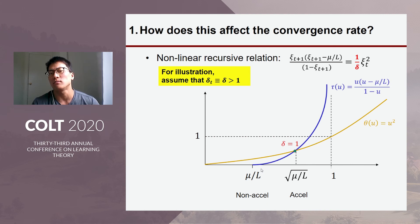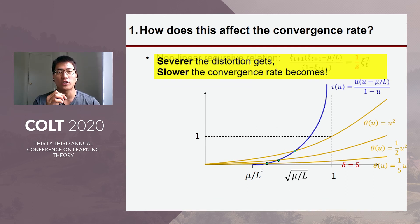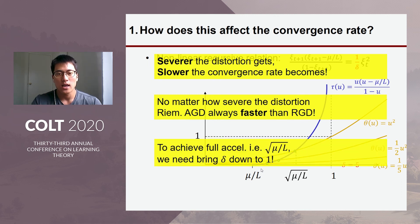So, let's answer the first question first. So, for illustration, let's say the distortion rate is just fixed constant delta over iterations. Then basically, the characteristic function will be shifted downward. So, the fixed point will be shifted more toward the non-accelerated rate as the distortion gets severer. In other words, the severer the distortion, the slower the convergence rate becomes. And no matter how severe the distortion is, the Riemannian accelerate method is always faster than just non-accelerated gradient descent. And in order to achieve the accelerated rate, full acceleration, we need to bring the distortion rate down to one. Okay. So, this completely answers the first question.